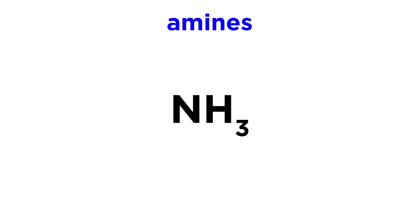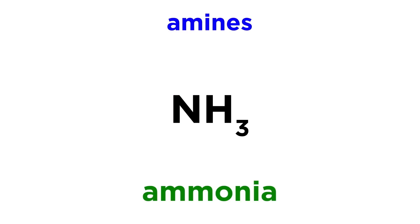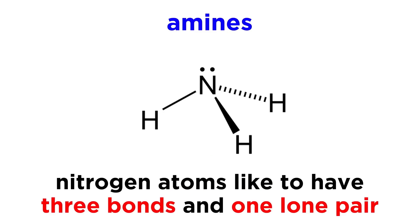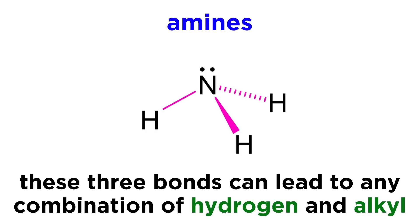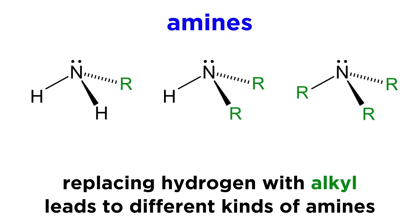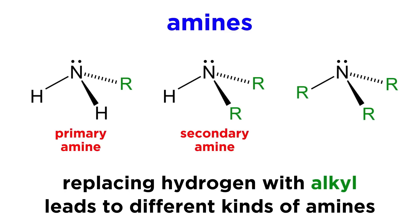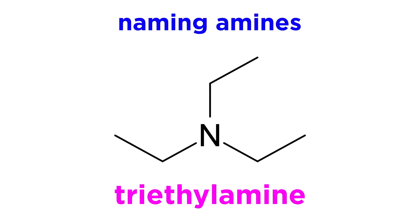Now let's check out the amine. This group is based on nitrogen. The simplest amine is ammonia, NH3. With five valence electrons, nitrogen will typically make three bonds and have a lone pair left over, and these bonds can lead to any combination of hydrogen and carbon atoms in order to qualify as an amine. As we replace hydrogen atoms with alkyl groups, we can get a primary amine, a secondary amine, or a tertiary amine. These are named like ethers, by specifying the alkyl groups, such as with triethylamine.